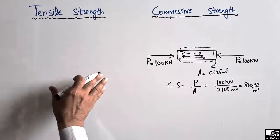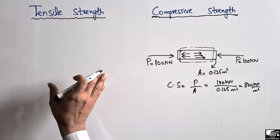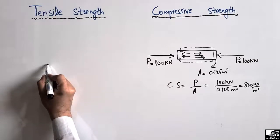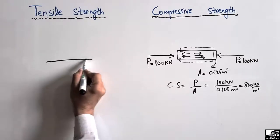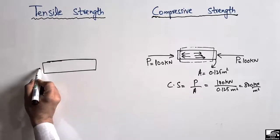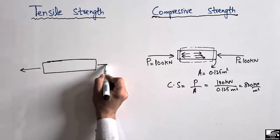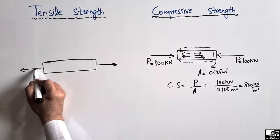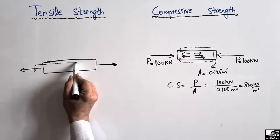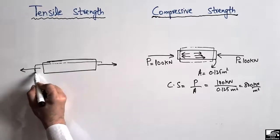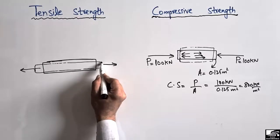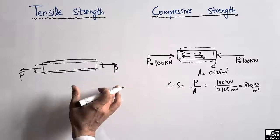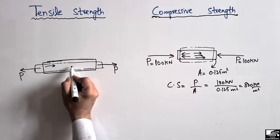Similarly, if there is a tensile load acting on an object, the resistance provided to that tensile load is the tensile strength of the material. Consider this steel rod — a tensile load is acting on it, and the tensile load tends to elongate the material. It will change its shape by elongating along the length, and this load is called the tensile load.